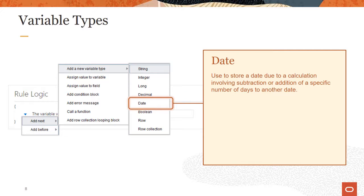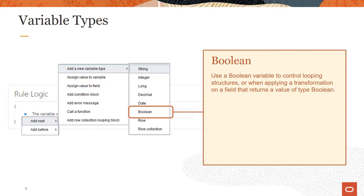Another variable type is date which stores a date derived from a calculation involving adding or subtracting a specific number of days from a specific date. Or you can apply a transformation function to return a date type value. Boolean is another variable type used to control looping structures or when you apply a transformation on a field that returns a Boolean value.